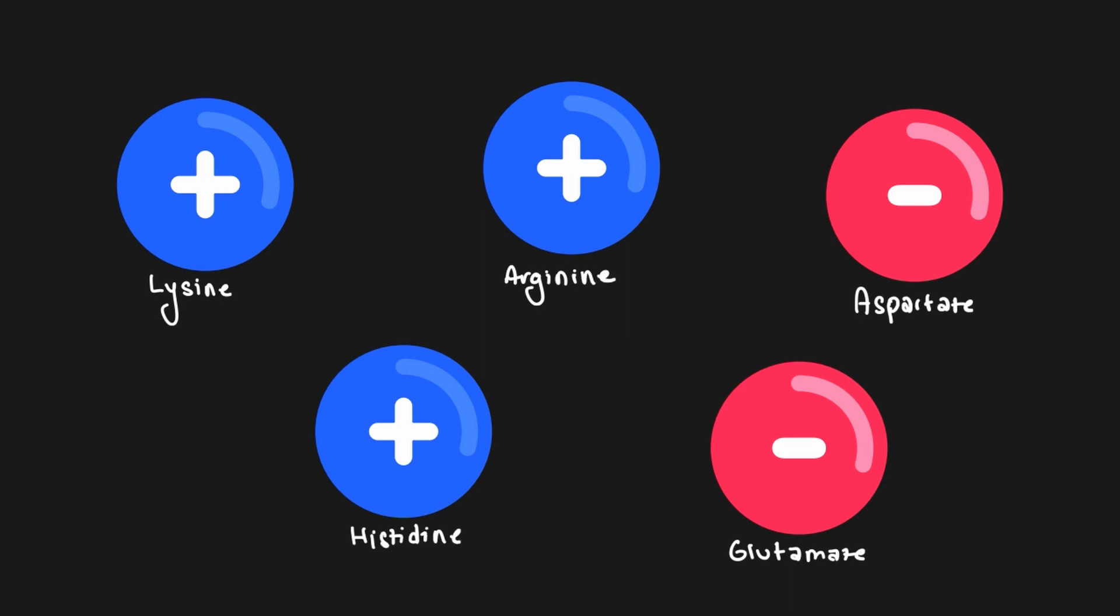These amino acids are classified as charged because at or near physiological pH, their side chains will carry either a positive or a negative charge. Although histidine is typically neutral at physiological pH, we will be including it in our list of the charged amino acids today because it will impact how different proteins behave during isoelectric focusing. Here, pH is super important because protonation and deprotonation is what causes the side chains to be charged in the first place.